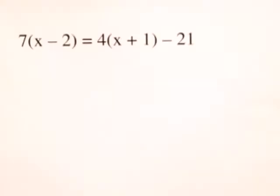For this problem, let's solve the linear equation. We have 7 times the quantity x minus 2 equals 4 times the quantity x plus 1 minus 21.